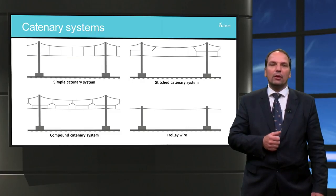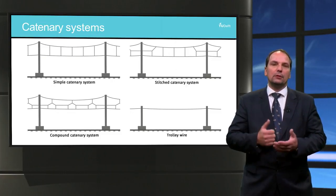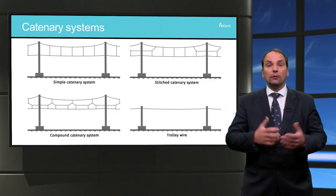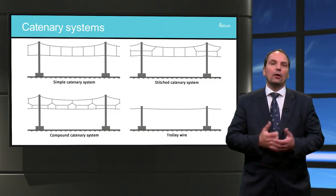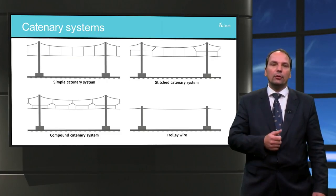Therefore, different configurations and catenary suspension systems have been proposed and are used. Almost all designs can be grouped into four main types. The trolley wire is the only type which has a single wire. The other systems all contain a messenger wire connected to the contact wire by vertical droppers.